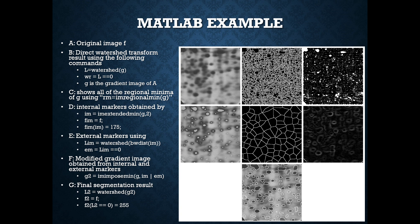The fifth image is the external markers obtained by using watershed of bwdistance of image. The sixth image is the modified gradient image obtained from the internal and external markers by the command imimposemin.